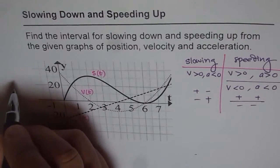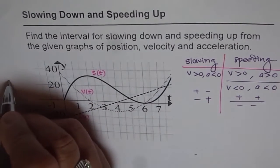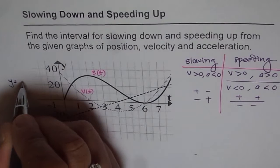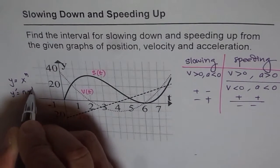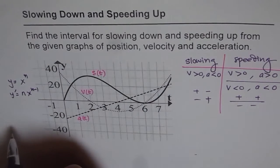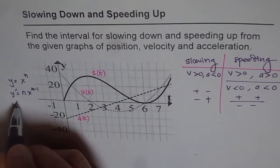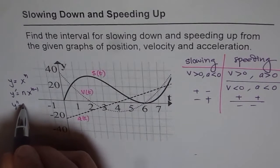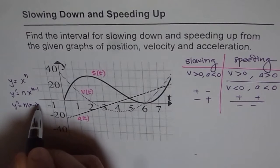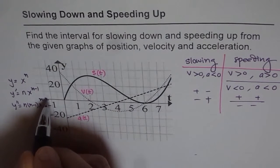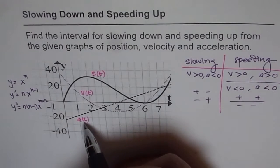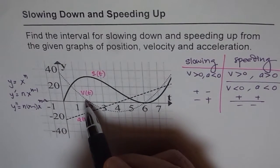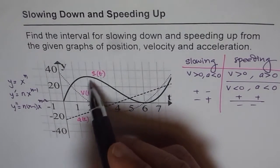Let's take a basic function: y equals x to the power of n. Then y-prime equals n times x to the power of n minus 1 — one degree lower. The second derivative will be n times (n minus 1) times x to the power of n minus 2 — another degree lower. So this is the lowest degree graph, with the others being higher.